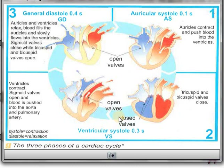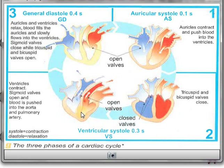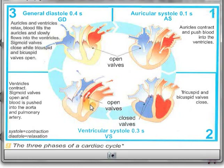Now let's go to the ventricular systole. During the ventricular systole, the tricuspid and bicuspid valves close, and the sigmoid valves open. When the ventricles contract, the muscle of the ventricle pushes the blood from the ventricles to the arteries. The right ventricle pushes blood to the pulmonary artery, while the left ventricle pushes blood to the aorta. So the sigmoid valves are opened, and the tricuspid and bicuspid valves are closed.